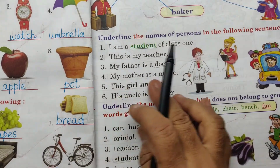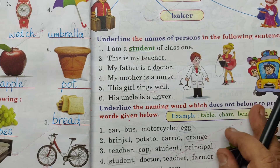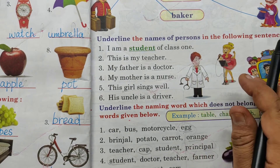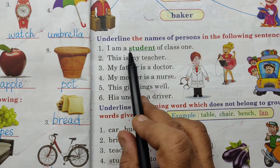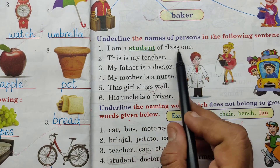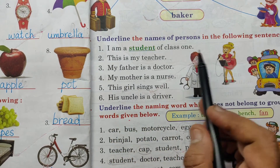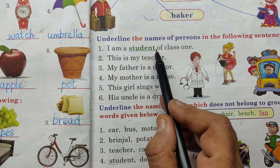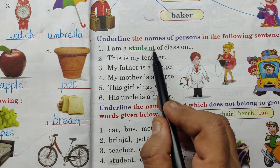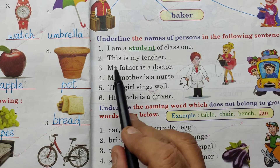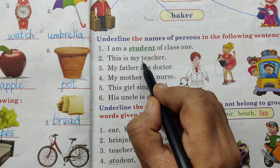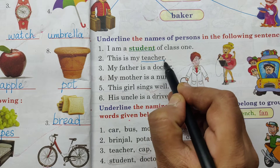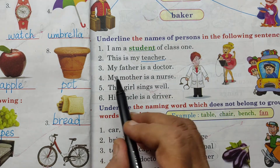Underline the names of persons in the following sentences. I am a student of class 1. Student - underline - names of person. This is my teacher. Underline. Teacher - names of person.